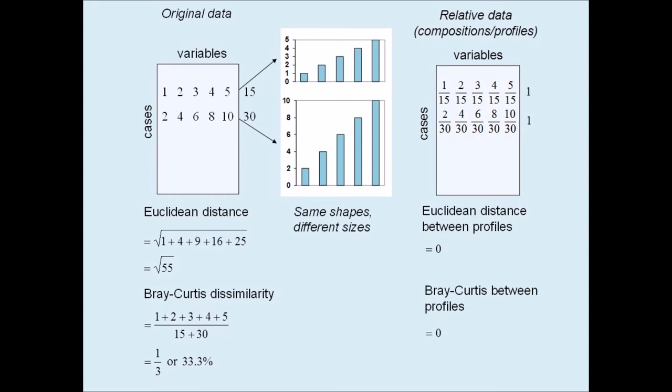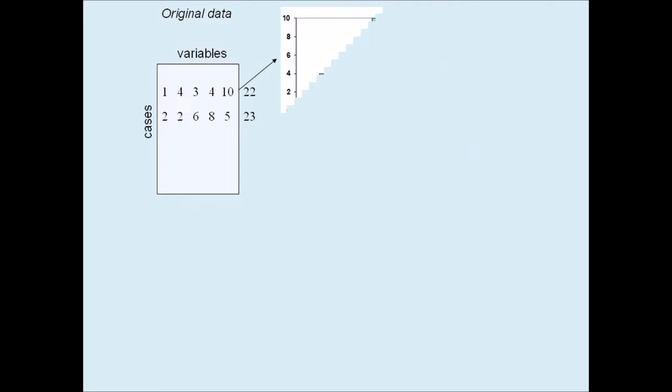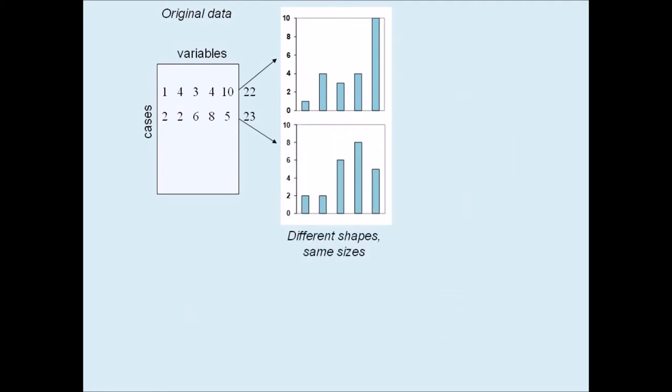Now let's make a simple change in the data, by interchanging the values in the second and fourth columns between the two samples. The two sets of counts now have different shapes, but almost identical sizes.